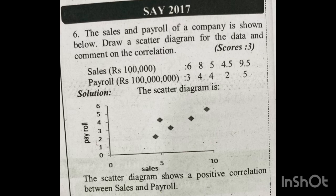Now look: sales is 6, payroll is 3. We plot the corresponding dot on the graph. That is the first point. Next, at sales 6, payroll is 4 — you can plot that point as well.